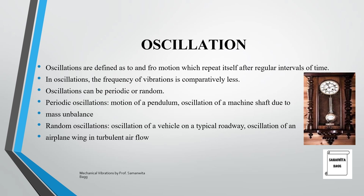Examples of periodic oscillations include the motion of a pendulum and the oscillation of a machine shaft due to mass unbalance. Examples of random oscillations include the oscillation of a vehicle on a typical roadway and the oscillation of an airplane wing in turbulent airflow.